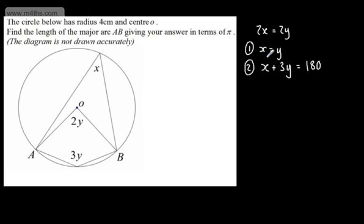I can make the substitution. If x is equal to y, I can substitute it into equation 2. And equation 2 becomes y plus 3y is equal to 180. So 4y is equal to 180. Dividing both sides by 4...